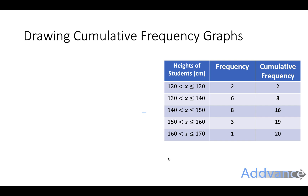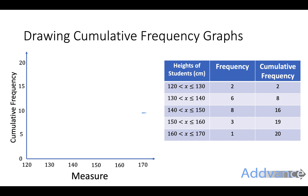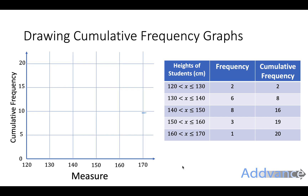Now we're going to draw a cumulative frequency graph. To do this, we've got a line going up and a line going across with a scale. On the line across we've got the measure — for this it's going to be the heights. The y-axis is always the cumulative frequency. The measures always go across the bottom, and the cumulative frequency always goes on the y-axis.